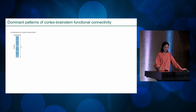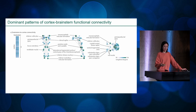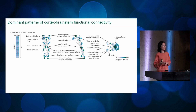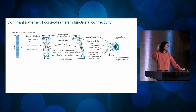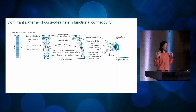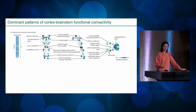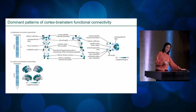Looking at dominant patterns of cortex-brainstem functional connectivity — with three views: coronal, sagittal, axial — the color and size of each node indicates how connected a brainstem nucleus is to the cortex. What I like is that it's spatially segregated: there are hubs of cortical connectivity at the top, middle, and bottom of the brainstem. Things that pop out include the dorsal raphe and different regions in the reticular formation.